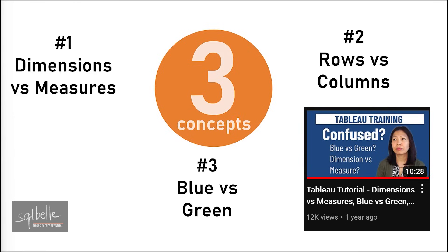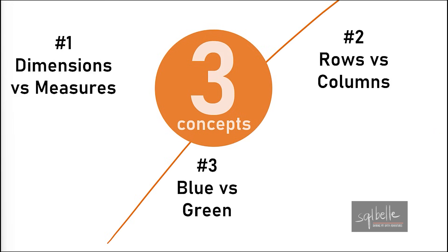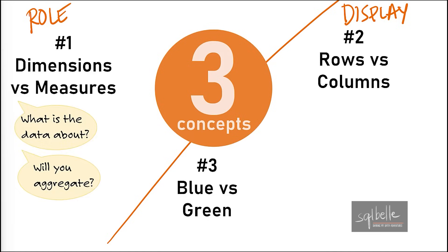Understanding these three foundational concepts will make us more effective when working with Tableau. This can help minimize errors and second-guessing why Tableau doesn't do what we want it to do. I want to start by dividing these three concepts into two groups: the first group is about the data role, where dimensions and measures are grouped. The other two concepts fall under display — rows and columns, as well as blue and green, pertain to display and formatting, not the role of the data.